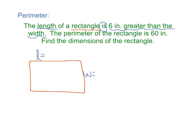In other words, the length L equals 6 inches greater than the width. So you take the width and you add 6. The length is 6 greater than the width. And then W, for right now I'm just going to have it as just W.